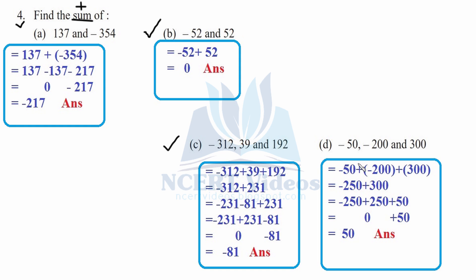Part d: minus 50 plus minus 200 plus minus 300. Signs are the same, so add them: 200 plus 50 gives 250, plus 300 as it is — signs are negative, giving minus 250 and minus 300 combined. Now the bigger number is 300; split it as 250 plus 50. Minus 250 and plus 250 cancel, leaving 50. Therefore 50 is your answer.